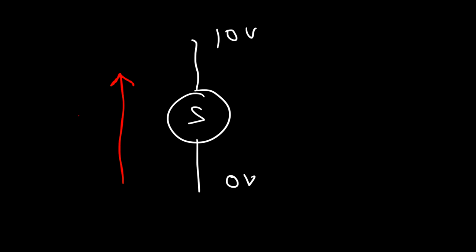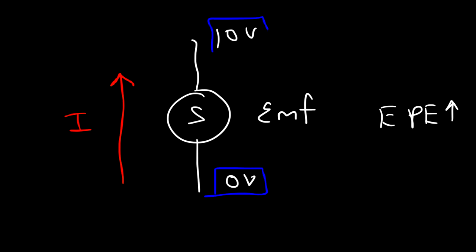A source takes current flowing through it from a low potential to a high potential. Whenever current flows from low to high potential, that source generates an EMF, which increases the electric potential energy of the charges. Make sure you understand: if current flows from high potential to low potential as in a resistor, the charges are losing energy. If current flows from low potential to high potential, the charges are gaining energy — the source is transferring its energy to the charges.